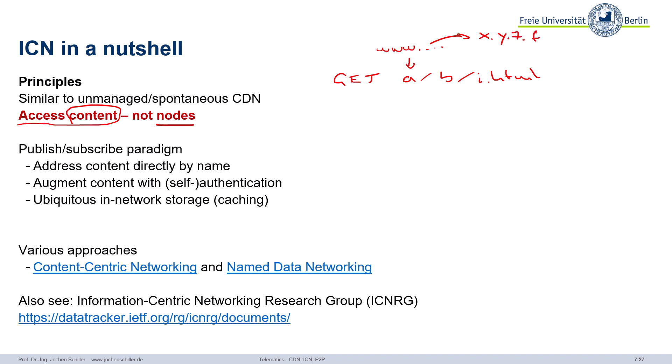In the end, today you address a node, a system, and then that system delivers the content. We do this using HTTP and TCP, doing routing and all these things. But really, you're not interested in the system — you're interested in the content. So why not just say: I want to have this content? Years ago there was already the idea of not only having the uniform resource locator that maps to a host, a number, an address.